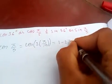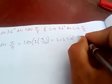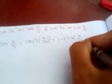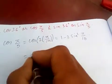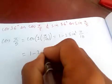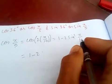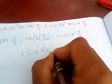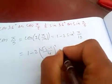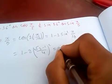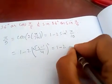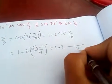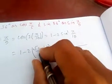1 minus 2 sin² π/10, which is 1 minus 2, sin π/10 is just (√5 - 1)/4. So if you simplify this, 1 minus 2, here is 16, and (a - b)²